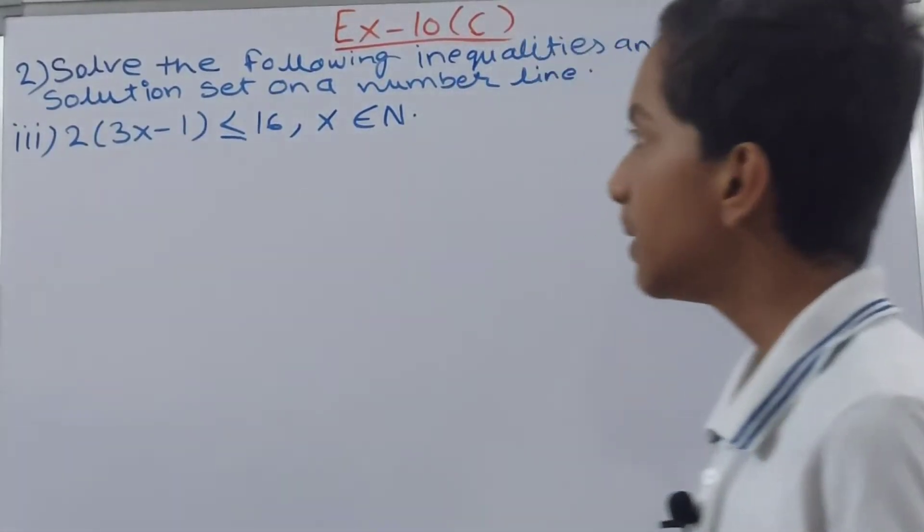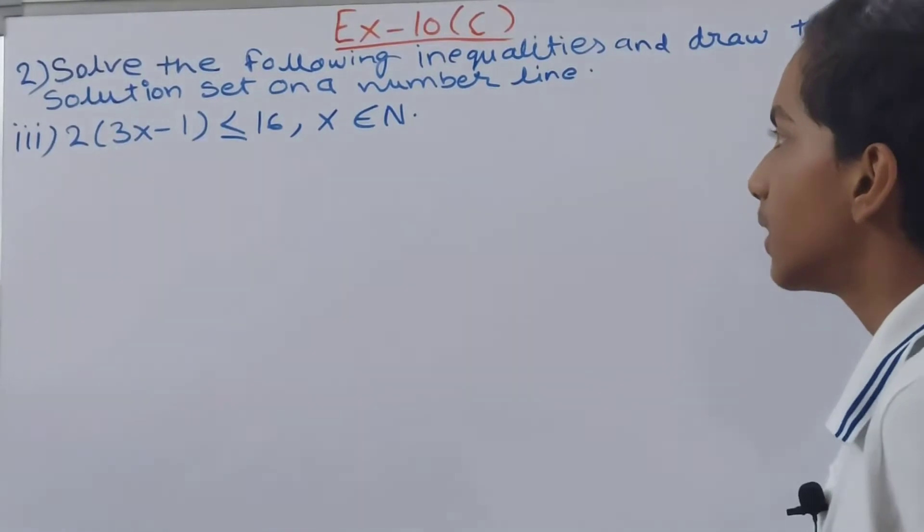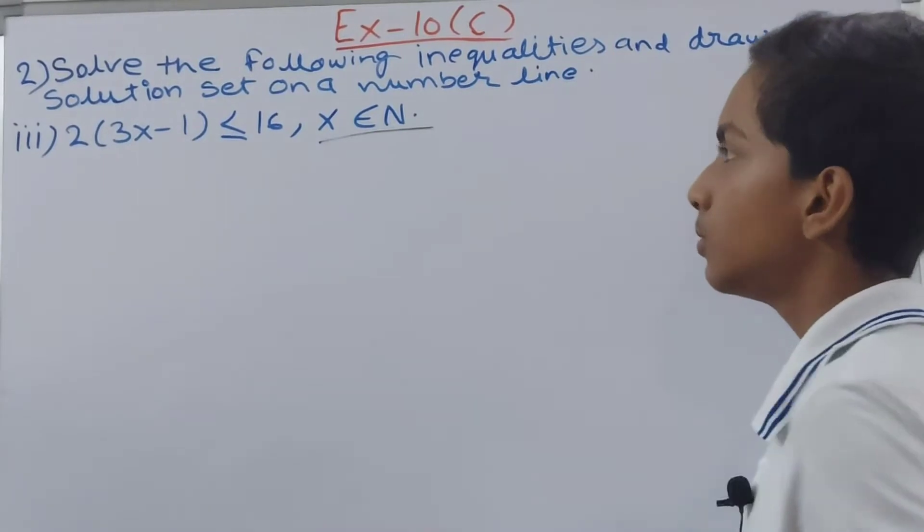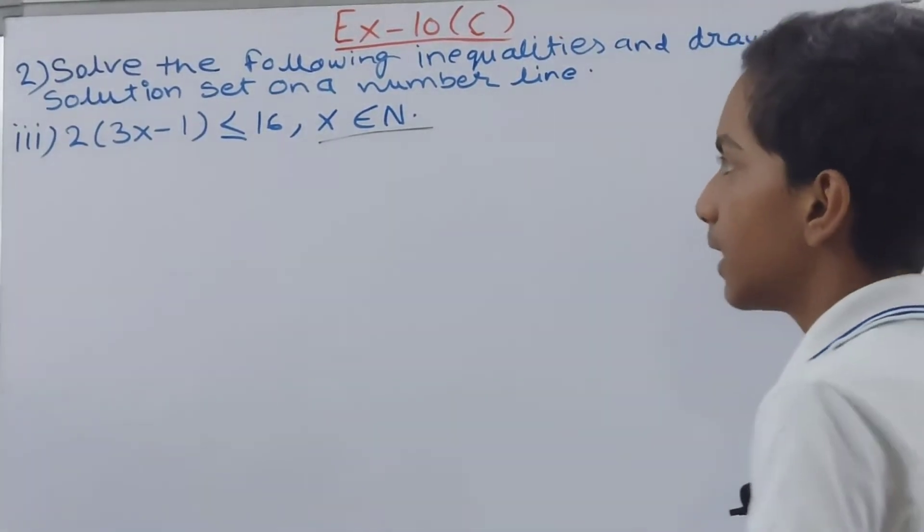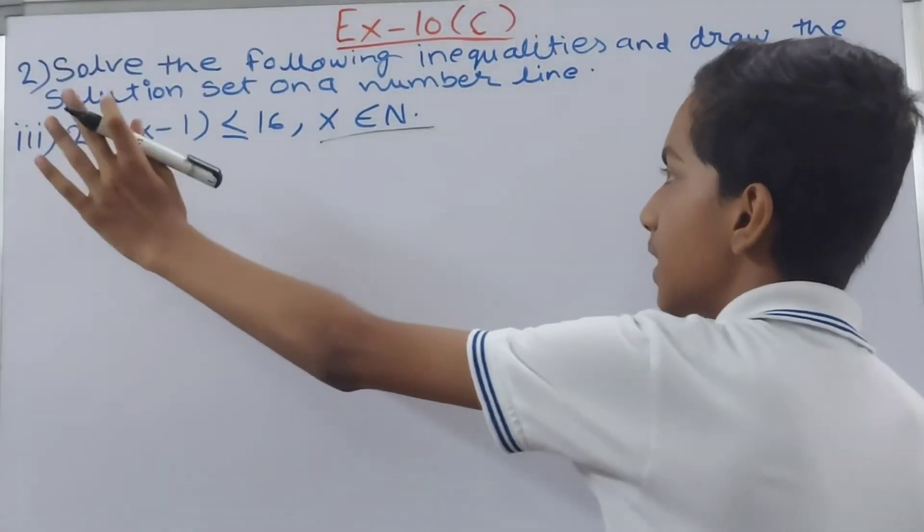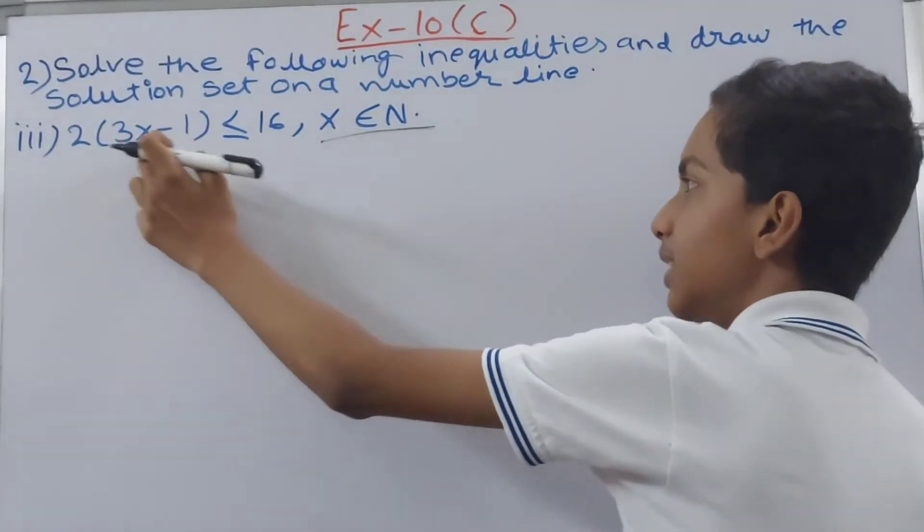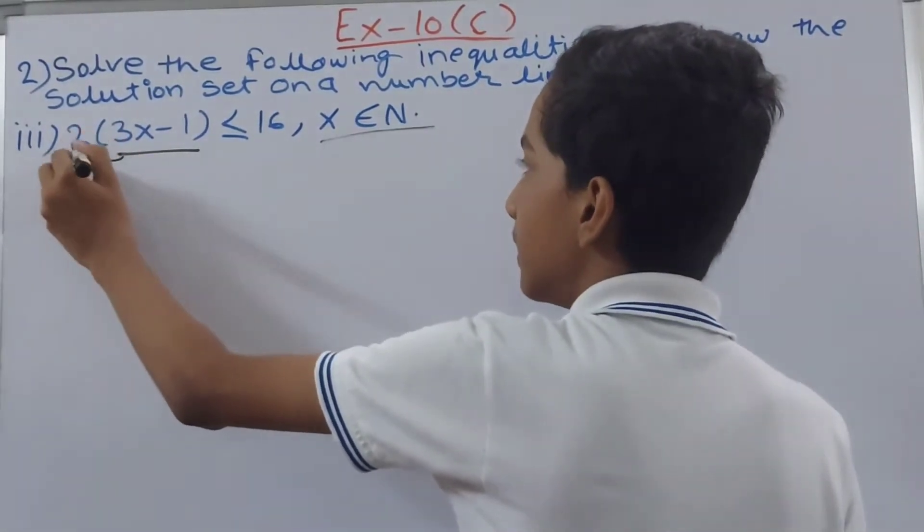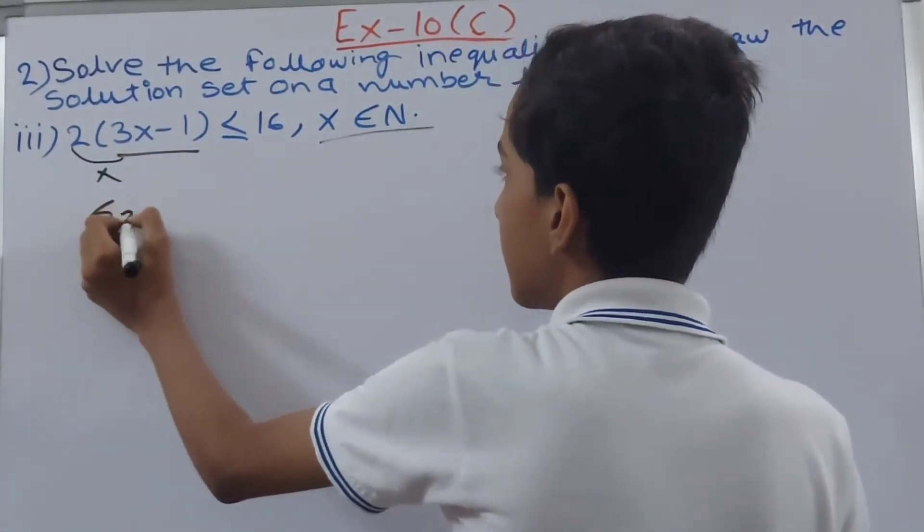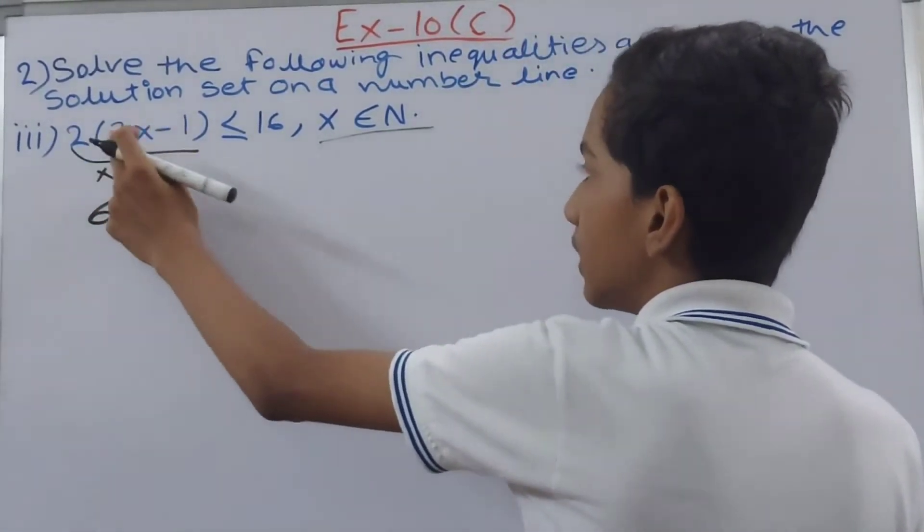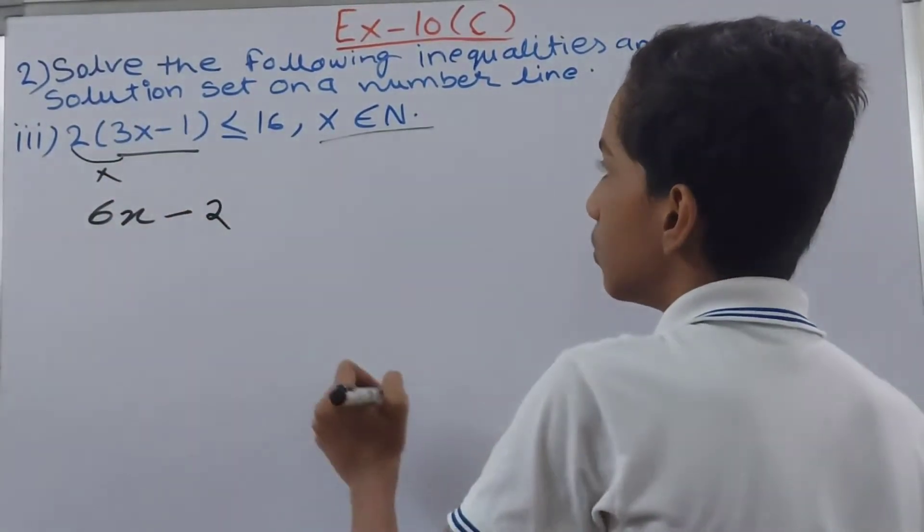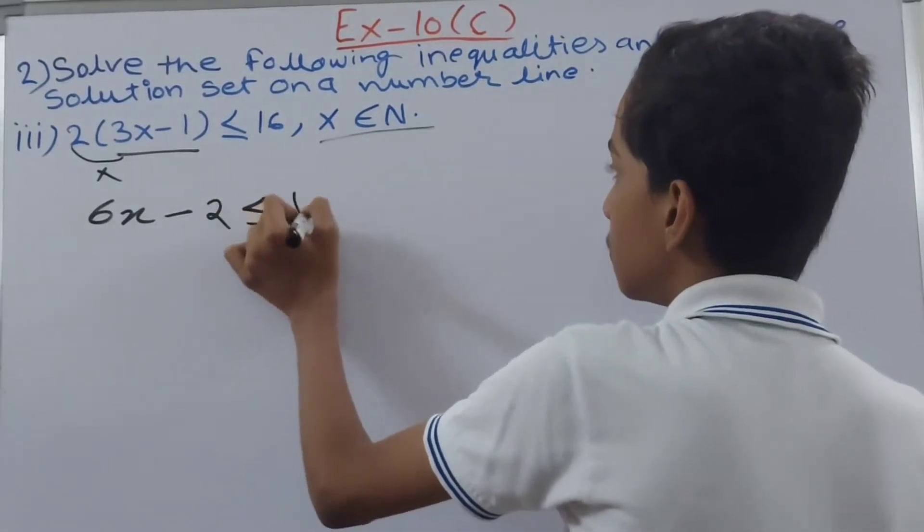Now this part is 2 in brackets 3x minus 1 is less than or equal to 16, given that x belongs to natural numbers. So again we start writing. This thing in the bracket, outside the bracket we have a number written here. So the numbers inside the bracket will get multiplied by this number. So you do that: 3 into 2x is 6x and minus 1 into 2 is 2. This is less than or equal to 16.